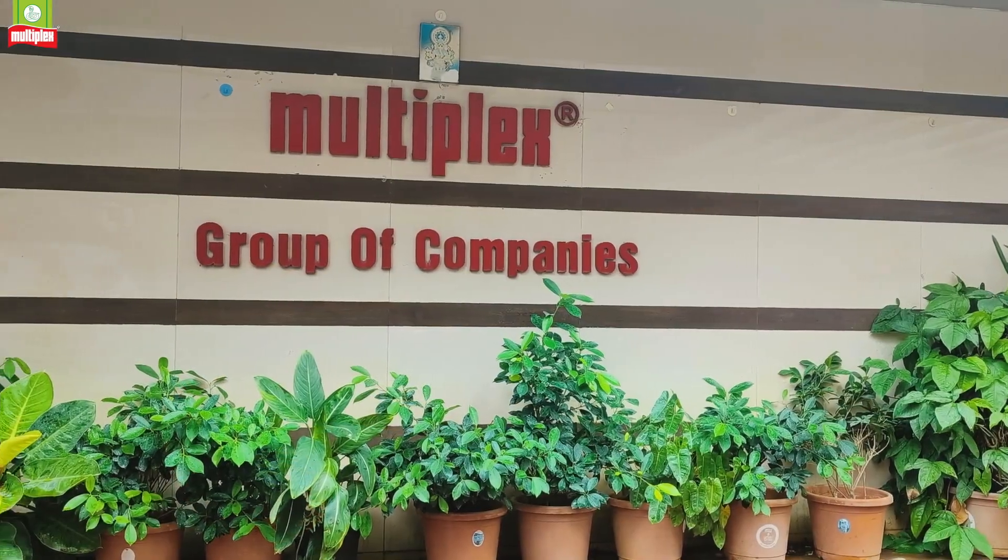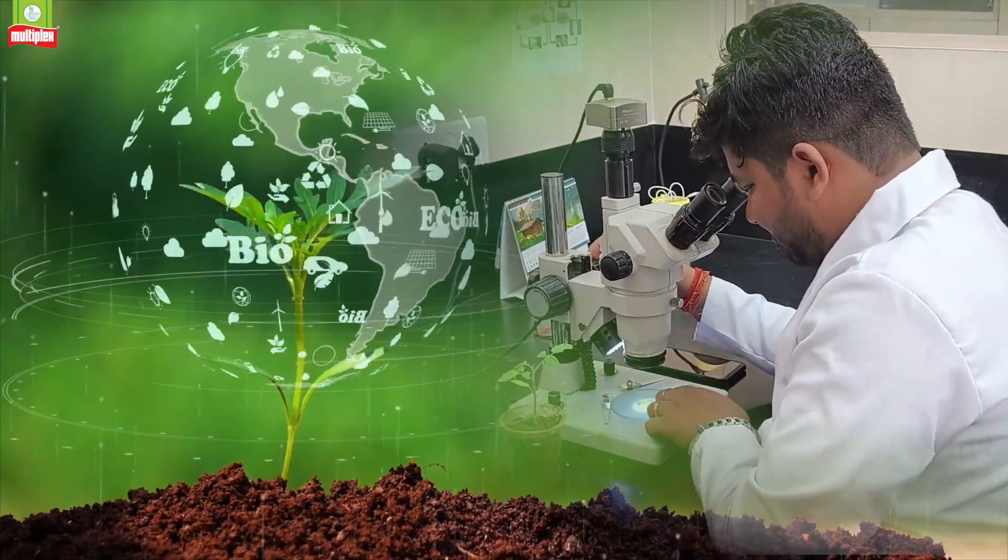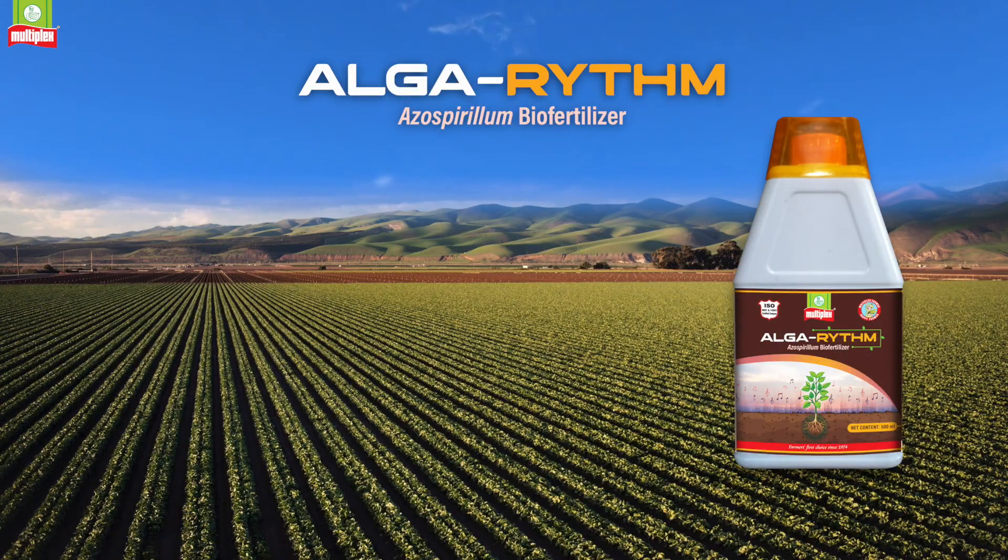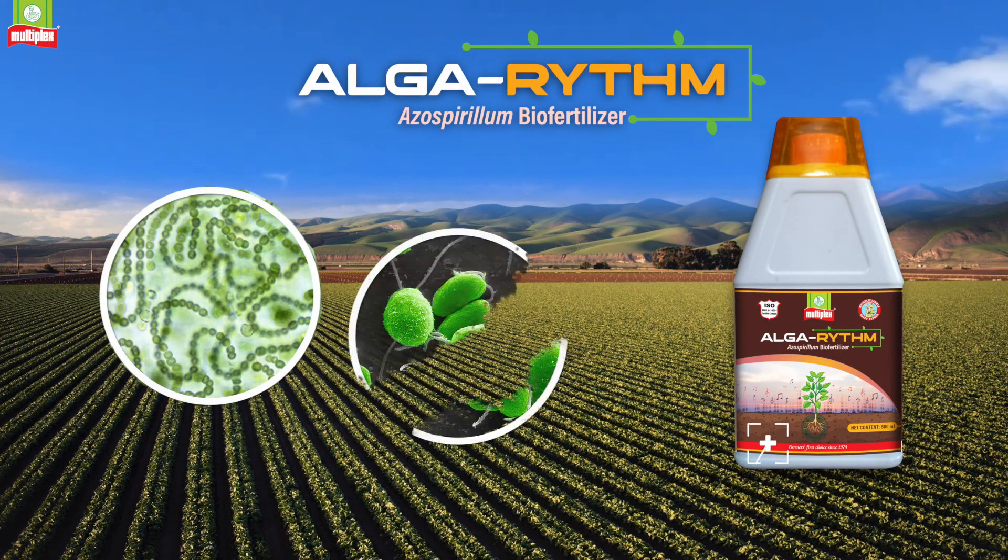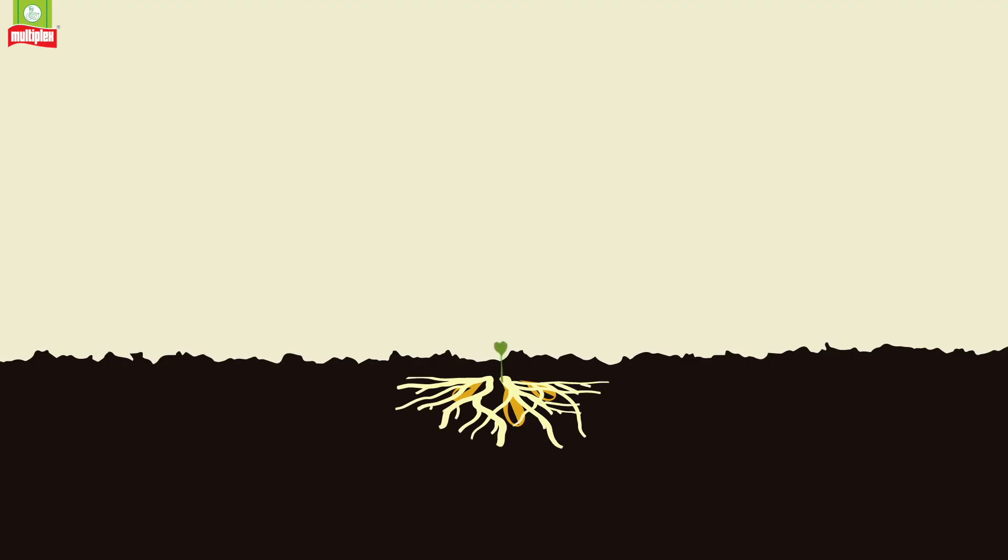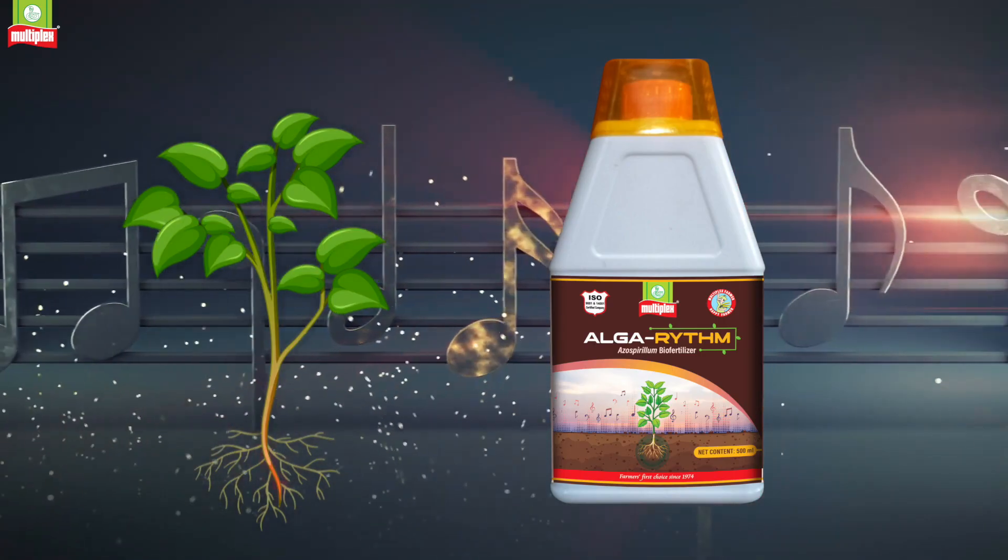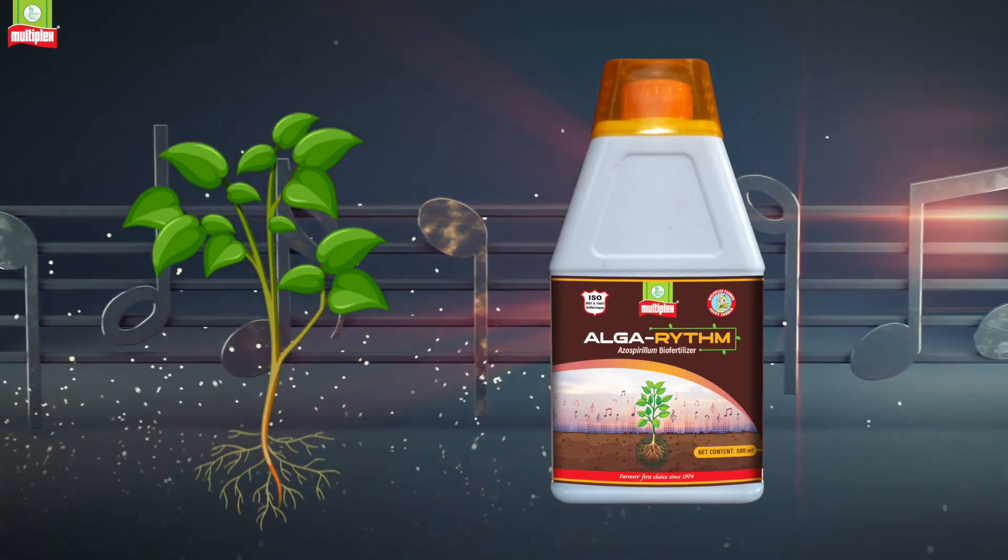Multiplex has come out with a pioneering innovative biofertilizer in the brand name of Multiplex Algarhythm. It contains azo-spiralum and beneficial micro-algae. It plays a key role in plant growth. Algarhythm is a single product with multiple benefits.